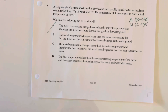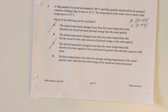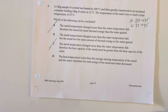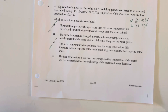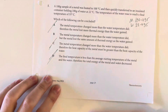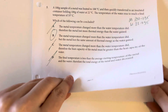Option C says the metal temperature changed more than the water temperature did, therefore the heat capacity of the metal must be greater than that of water. This is the exact opposite — we were able to change the metal's temperature much more easily, as shown by the larger change in temperature. Option D says the total energy of the metal and water decreased, but that is not true since the water increased in temperature. Answer choice B is the only answer that matches our understanding of thermodynamics.